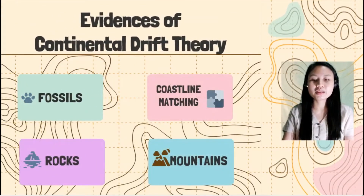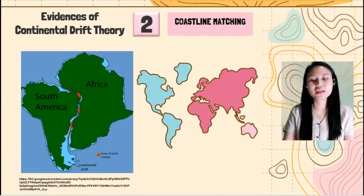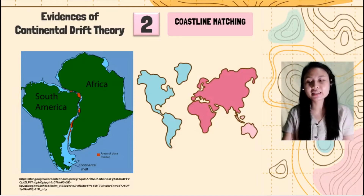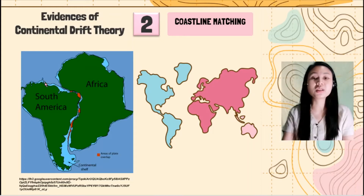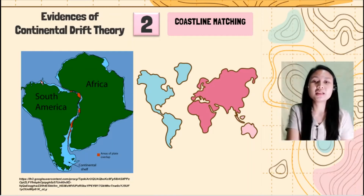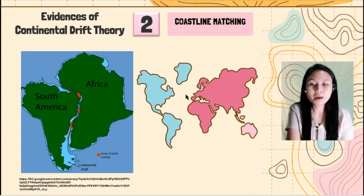The second evidence is coastline matching. We have here South America and Africa as an example. The edges of the plates seem to be connected with each other, or seem to fit with each other like a jigsaw puzzle. And as you can see here, we also have the map.